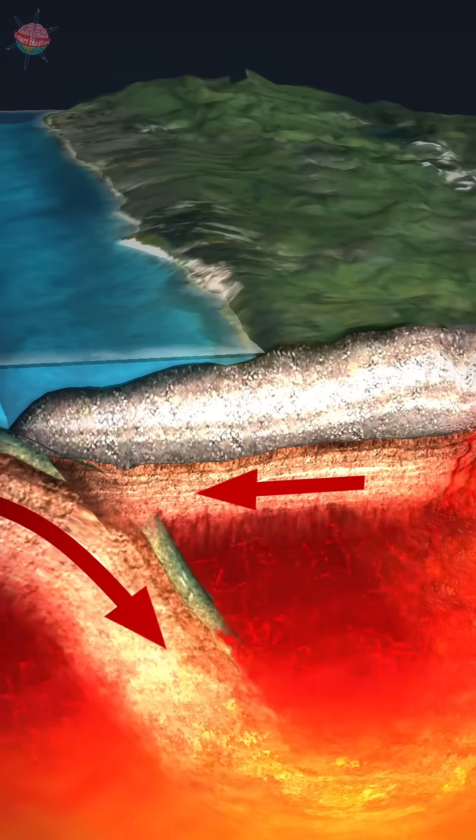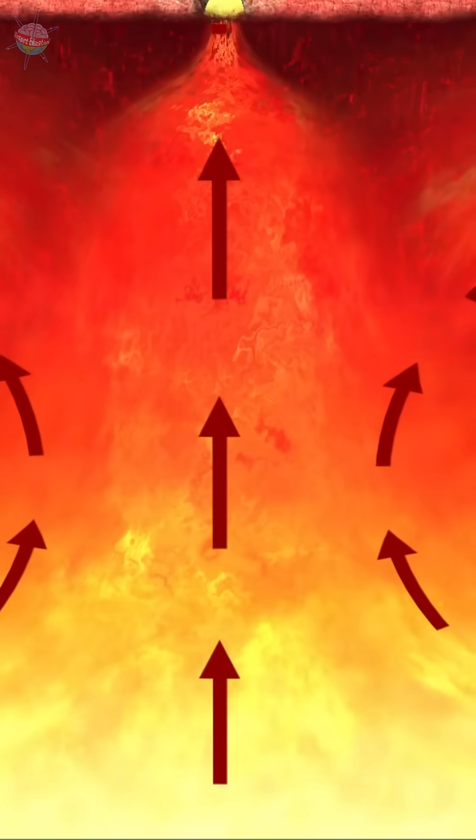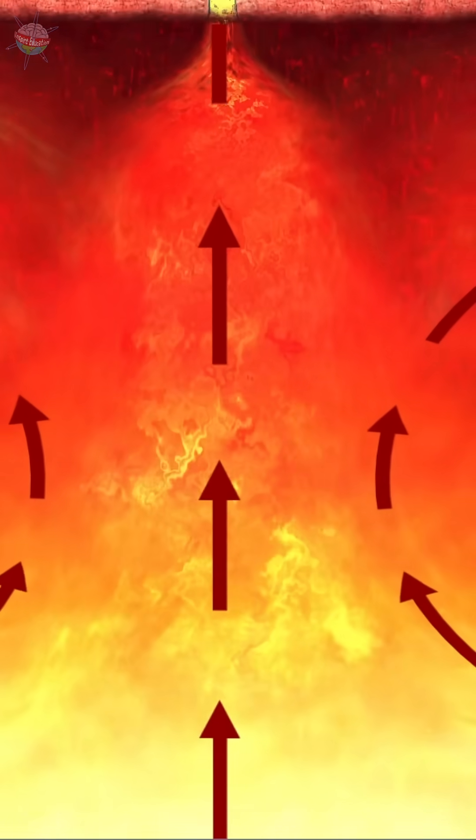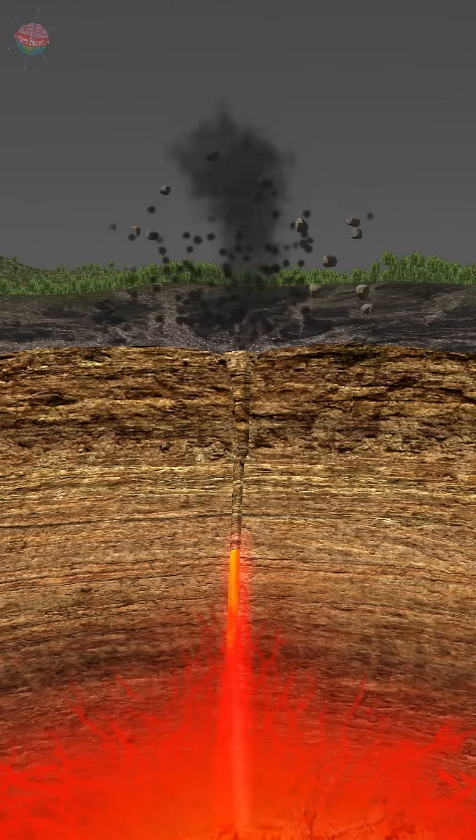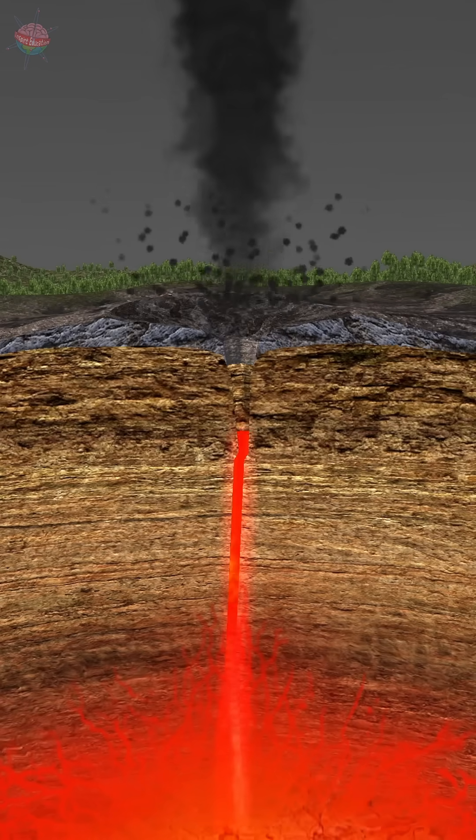When the plates of the Earth's crust move and as the magma rises, more and more pressure builds up. Eventually, the magma explodes out of the surface in a volcanic eruption.